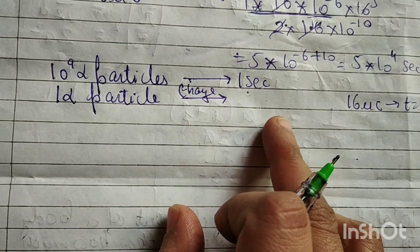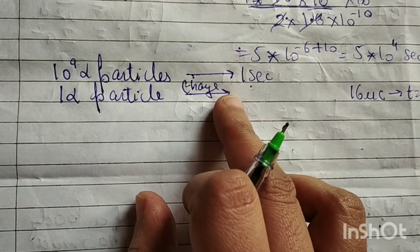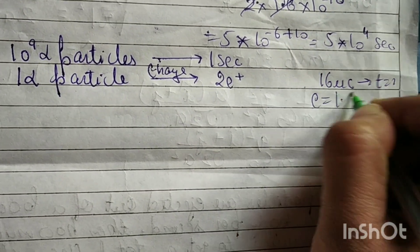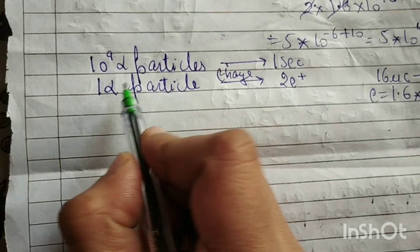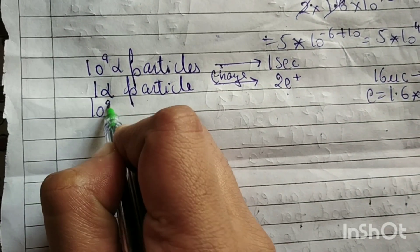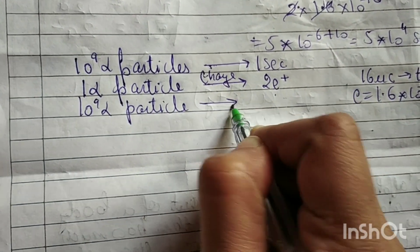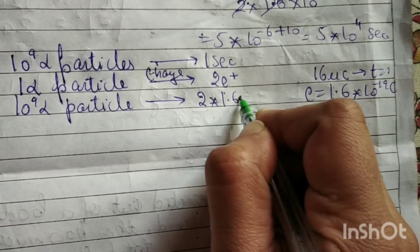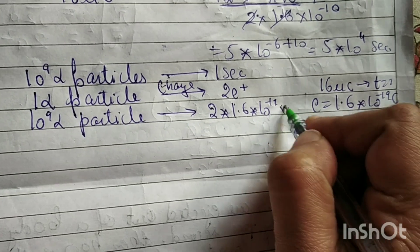We need to convert the number of particles into charge. We know that one alpha particle carries a charge of 2E, where E is equal to 1.6 into 10 to the power minus 19 coulombs. So for 10 to the power 9 alpha particles, the charge equals 2 into 1.6 into 10 to the power minus 19, multiplied by 10 to the power 9.